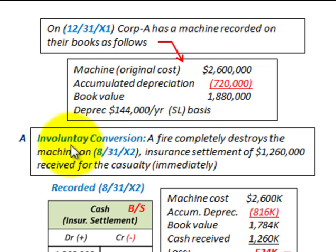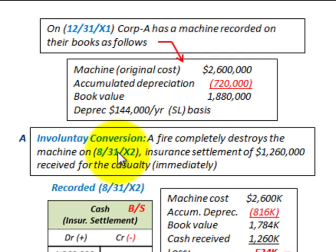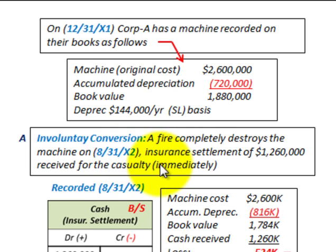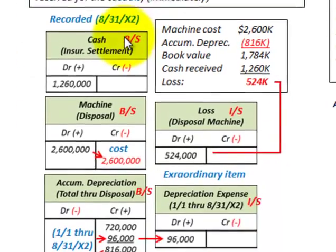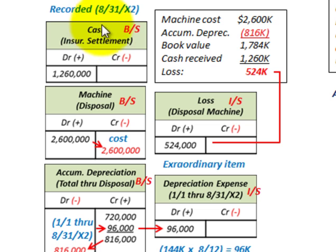For the involuntary conversion example, a fire completely destroys the machine on 8/31/X2, which is the next year at the end of August. The insurance settlement received for this casualty is $1,260,000. In this example it was received immediately. So we're going to look at how we record this as of 8/31/X2.